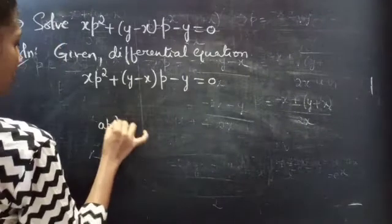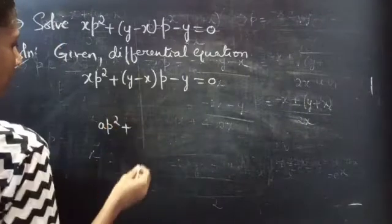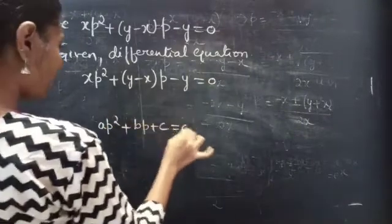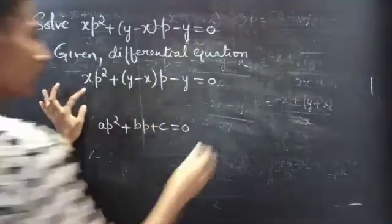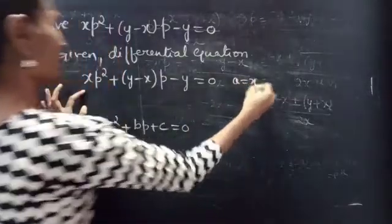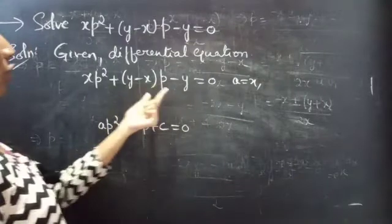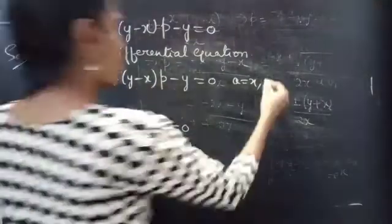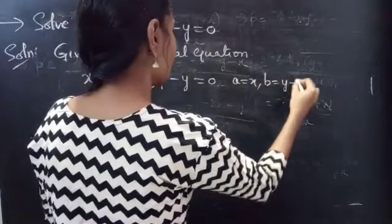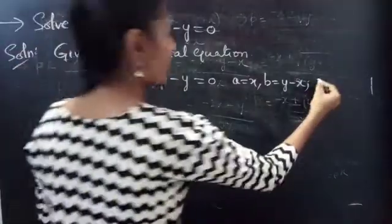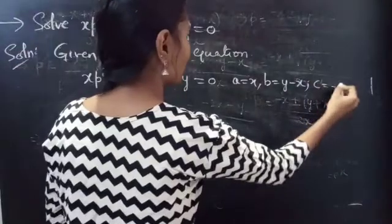Let's consider the general quadratic equation in p: ap² + bp + c. By comparing these two equations, we get a = x, b = (y - x), and c = -y.